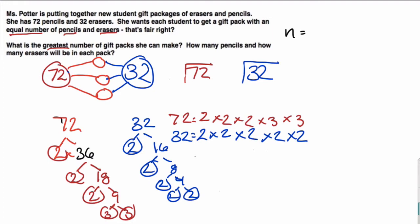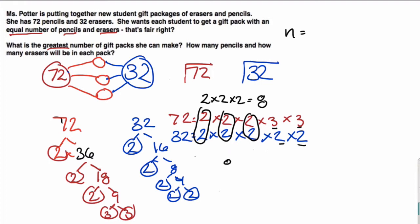Now I'm going to look for all the prime factors that they both have and circle them — I call them twins. They both have a factor of 2, another factor of 2, and another factor of 2. All that 72 has left is 3 and 3, and 32 only has 2 and 2, so there are no more common factors. Our prime factor strings show us the common factors are 2 × 2 × 2, which equals 8. So 8 is our greatest common factor.